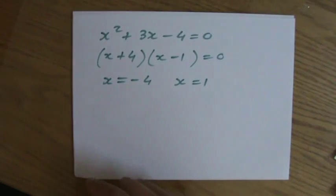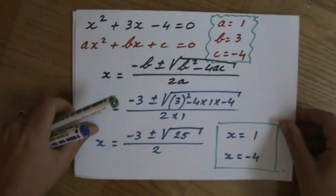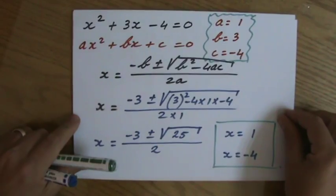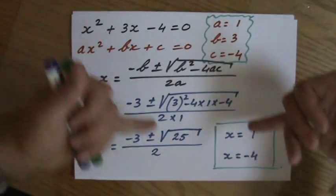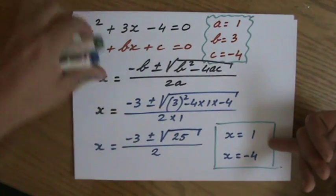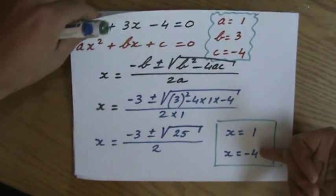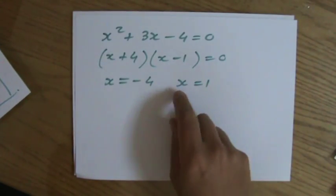So just to show you that that ABC formula, which looks scary and intimidating, which looks like some sort of magical trick, actually gives me the exact same answer, the correct answer. Because if I would factorize it, I get exactly the same.